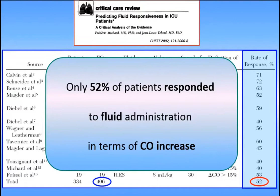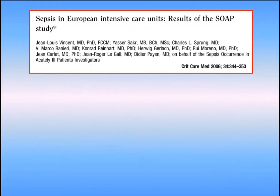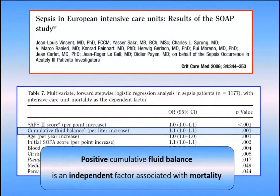We also know from the literature — for example from this study, but many others — that fluid overload or positive cumulative fluid balance is an independent predictor of mortality in patients with sepsis. So we have to keep in mind these two concepts.